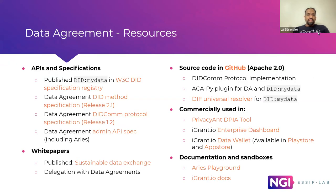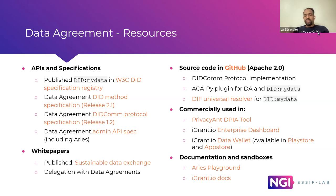These are just for your documentation and information. We have produced a bunch of artifacts including the APIs and specifications. We've published a white paper on the idea of sustainable data exchange with data agreements, and will soon be publishing another white paper about extending data agreements for delegation. On the right side, there is source code that is all Apache 2.0 licensed, and the commercial implementations are essentially in Privacy Ant, which is the DPA tool Jan will be demonstrating, and of course in iGrant — both in our verification services, the enterprise dashboard, as well as our data wallet — we have it functionally today.